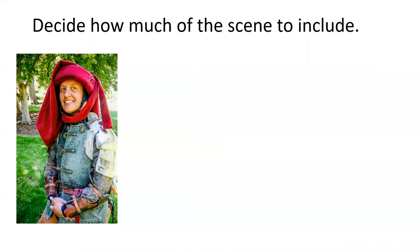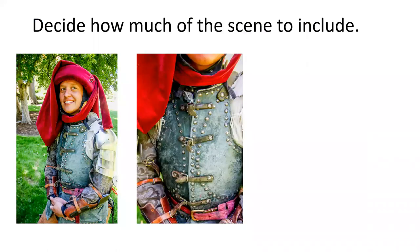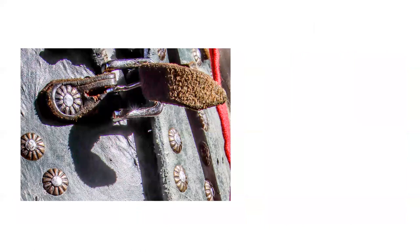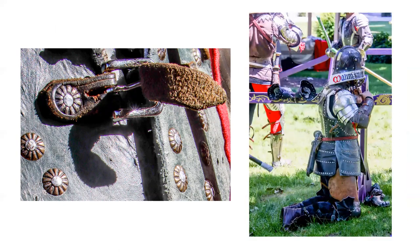Decide how much of the scene to include. Or more precisely, decide which element is your subject. A closer view reveals details. These options are stronger when captured in camera and not as crops. Note the rivets, the sun reflection on the buckle and the strapped shadow. Others will prefer a more inclusive image with less specific detail. The nice thing about digital is that you aren't limited to 12 or 36 images — you can take as many versions as you would like.